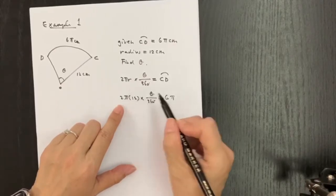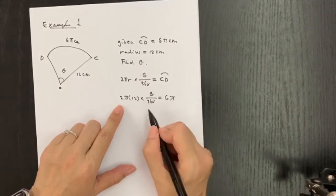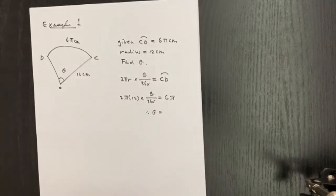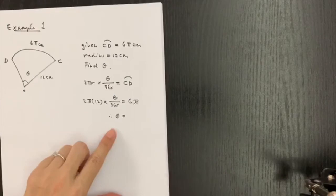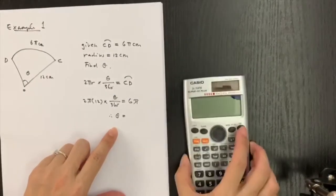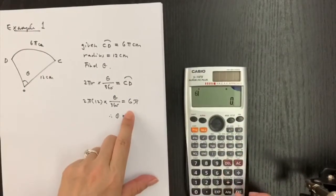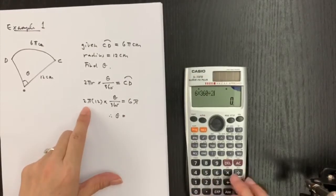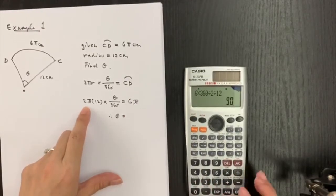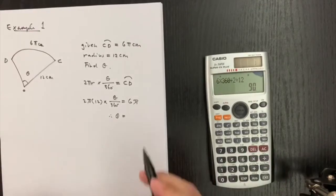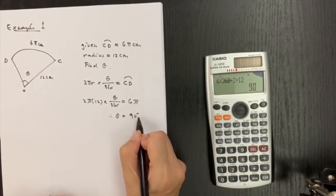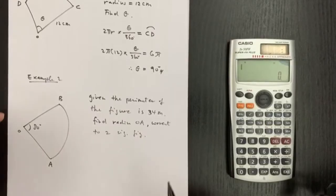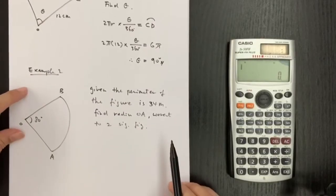I can substitute 2π times 12 times theta over 360 equals 6π. The pi terms cancel out. Using the calculator, I change the subject to theta: 6 times 360 divided by 2 divided by 12. So theta in this question is equal to 90 degrees.